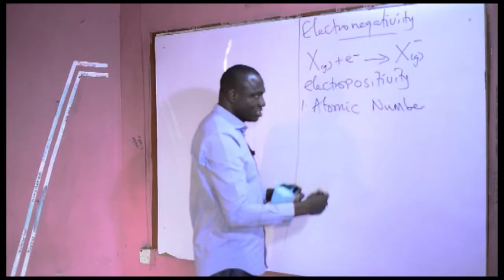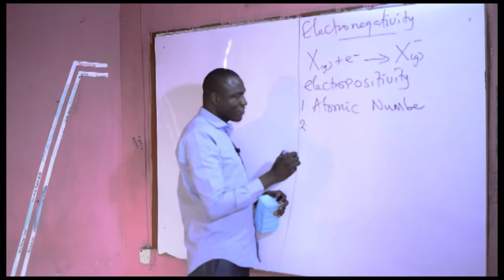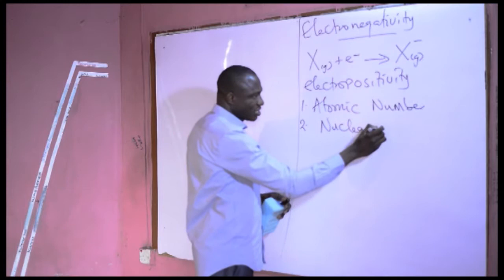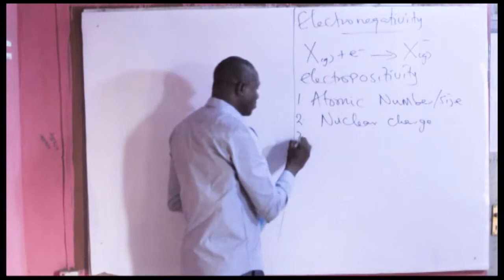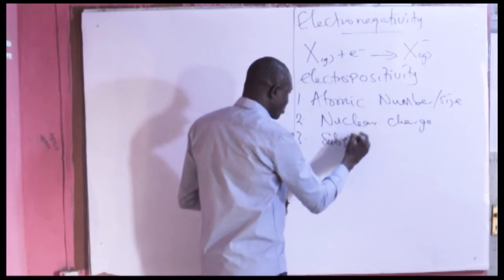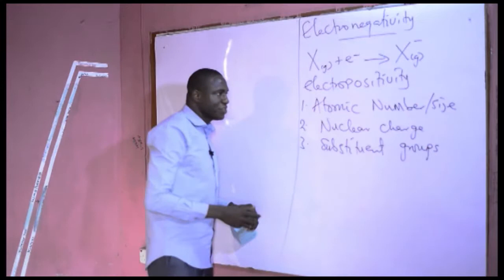The first factor is atomic number, which is a function of the size of the atom. The second factor is nuclear charge. There is also the effect of substituent groups. Let us look at how atomic number — or the size of an atom — affects electronegativity.